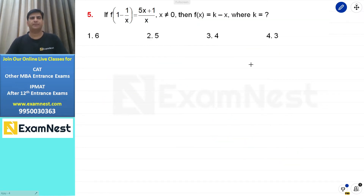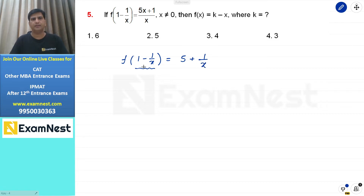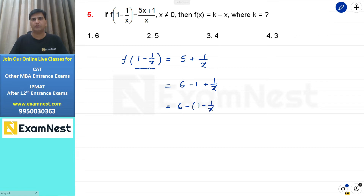Next question functions पर based, moderate level। f(1 - 1/x) = 5 + 1/x given है, x ≠ 0। f(x) = k - x, k की value निकालनी है। Right hand side को 1 - 1/x की terms में express करें। 5 + 1/x = 6 minus (1 - 1/x) — इसमें 1 add और subtract करने पर 6 - (1 - 1/x) आ जाता है।